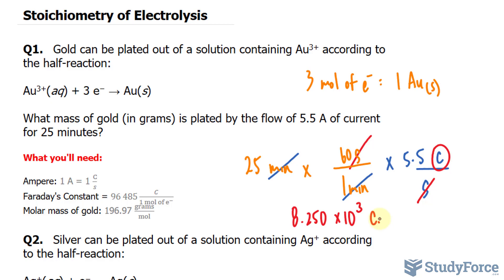The next thing is to use Faraday's constant to calculate the number of moles of electrons and the stoichiometry of the reaction to find the number of moles of gold. So I'll take this number and multiply it by 1 mole of electrons per 96,485 coulombs. That cancels out the coulombs, leaving us with the amount of moles of electrons.